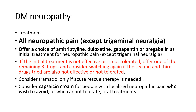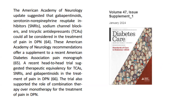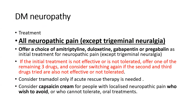Capsaicin cream — there is a specific FDA-approved concentration frequently asked in exams — is only used for localized neuropathic pain in patients who wish to avoid or cannot tolerate oral treatments. The ADA standards of care and the American Academy of Neurology both endorse gabapentinoids (pregabalin and gabapentin), SNRIs (venlafaxine), and tricyclic antidepressants for treating pain in diabetic polyneuropathy. Recent head-to-head trials suggest therapeutic equivalency amongst these agents.